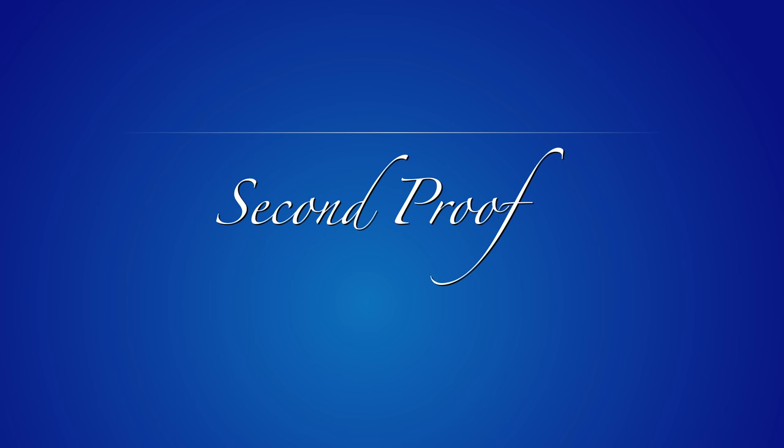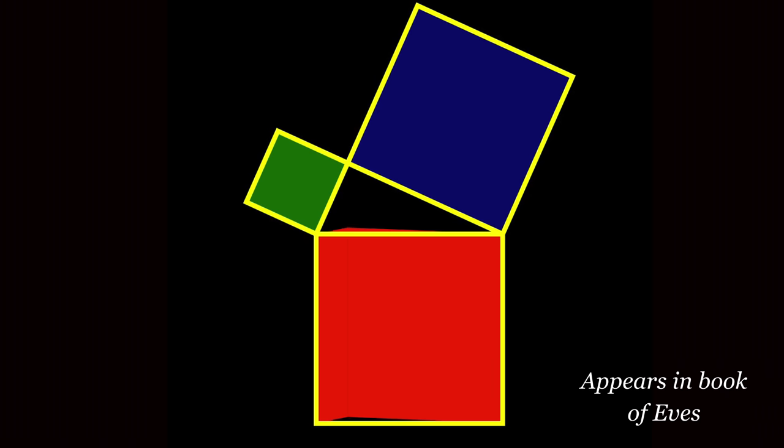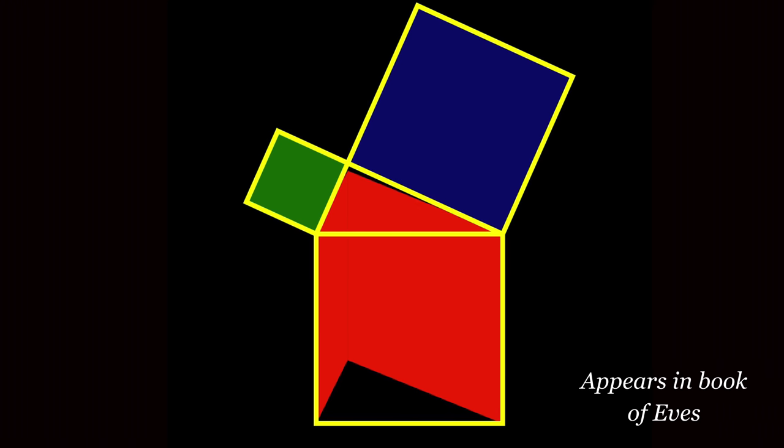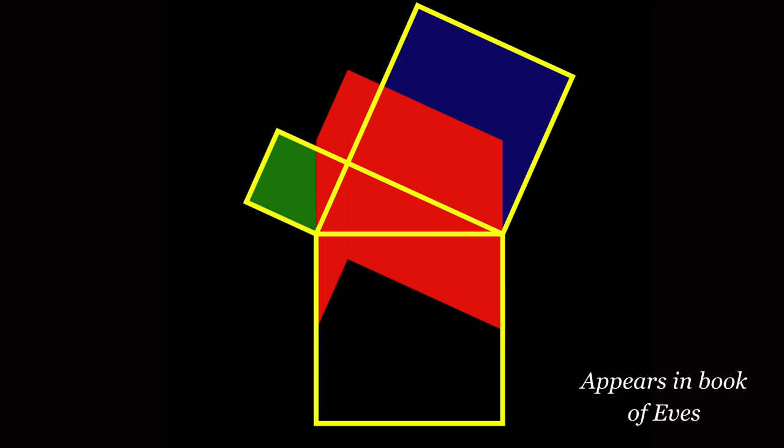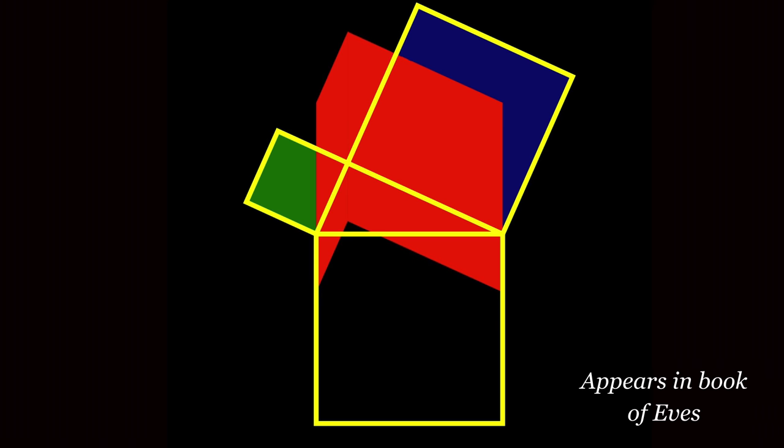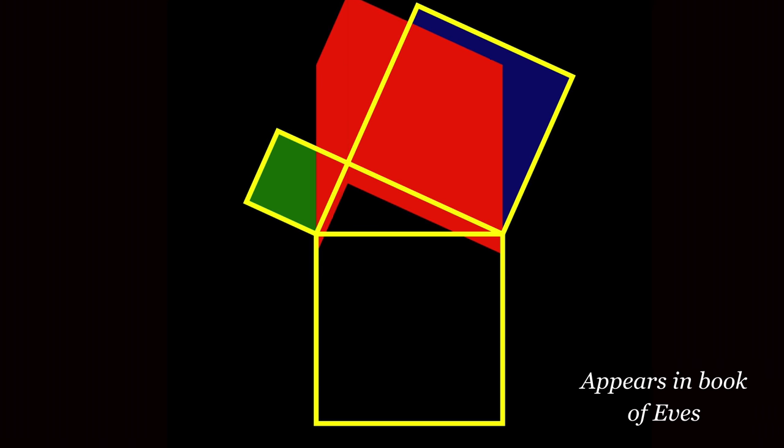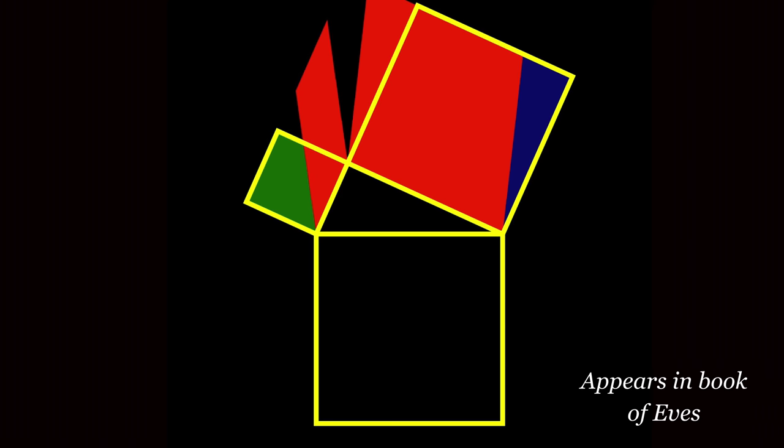And let's look at the second proof. It appears in the book of Eves. I animated it with Mathematica. What happens is this deformation of a rectangle into a parallelogram doesn't change the area. And then also moving these parallelograms doesn't change the area. And then again, we move them back to become squares.